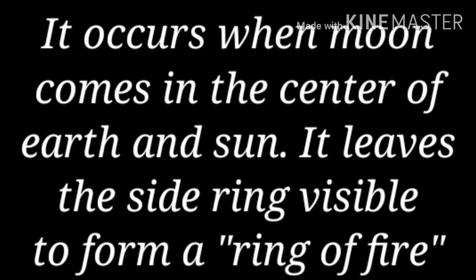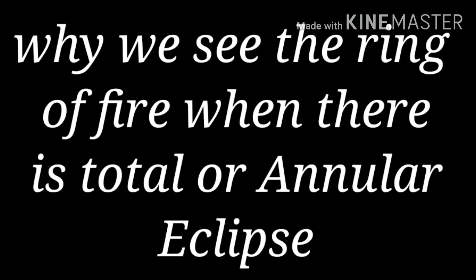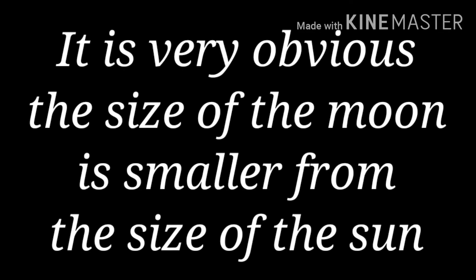In an annular solar eclipse, the moon comes in the center between the earth and Sun but leaves the side rings visible, forming a ring of light — the ring of fire. This is the image of an annular solar eclipse. We see the ring of fire because the size of the moon is smaller than the size of the Sun.